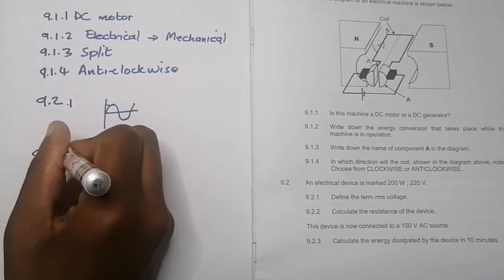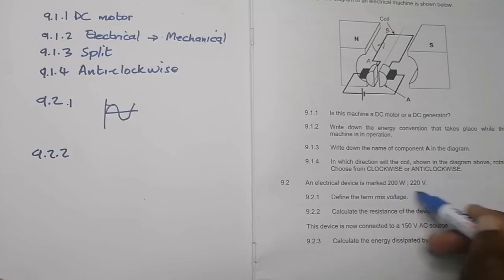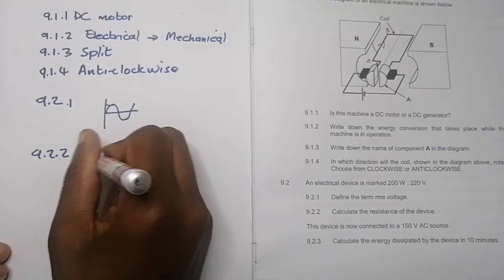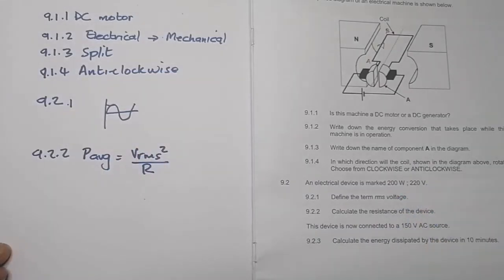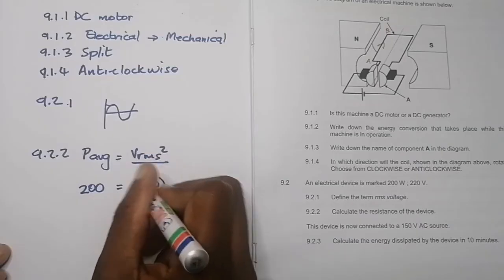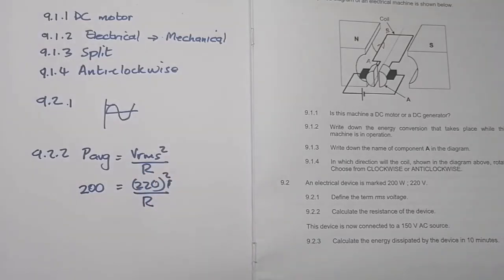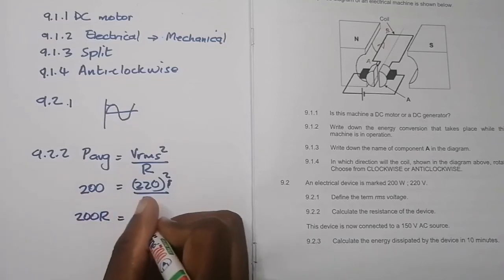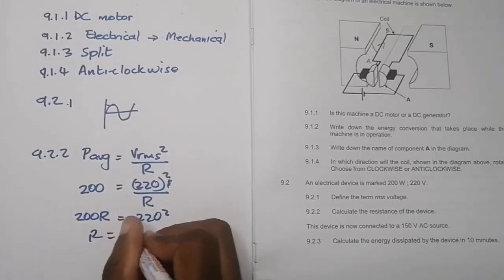They say calculate the resistance of the device. We're given the power and the voltage, so I'm going to go for P average equals V_rms squared divided by R. We've got 200 watts equals 220 squared divided by R. So this will be 200R equals 220 squared, and we can find the value of R there. The answer is 242 ohms.